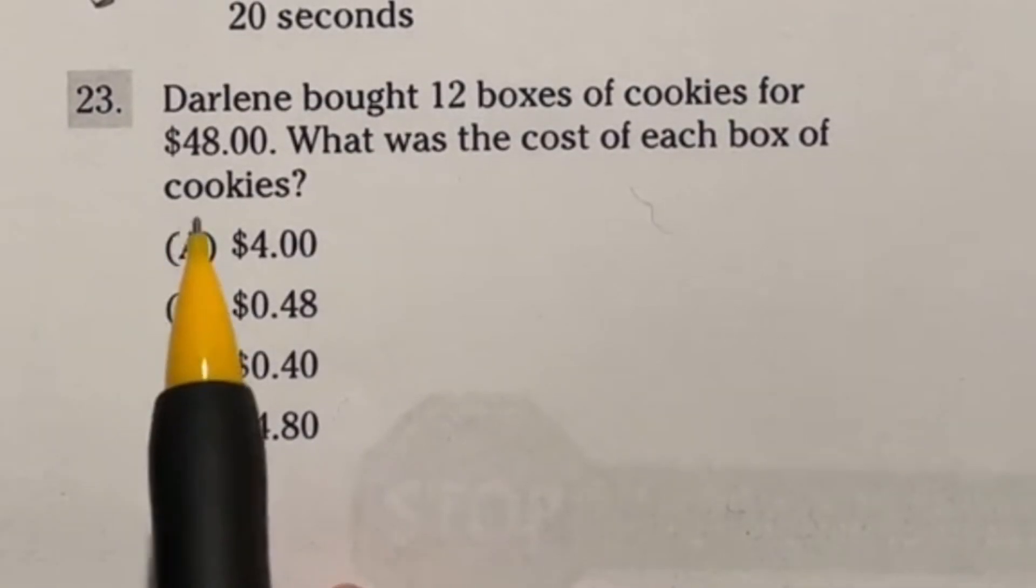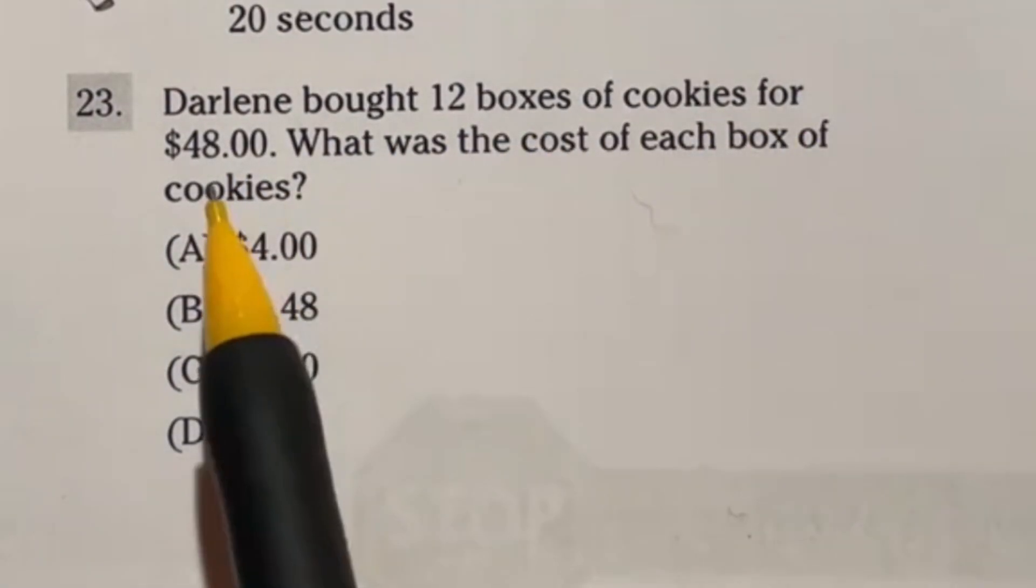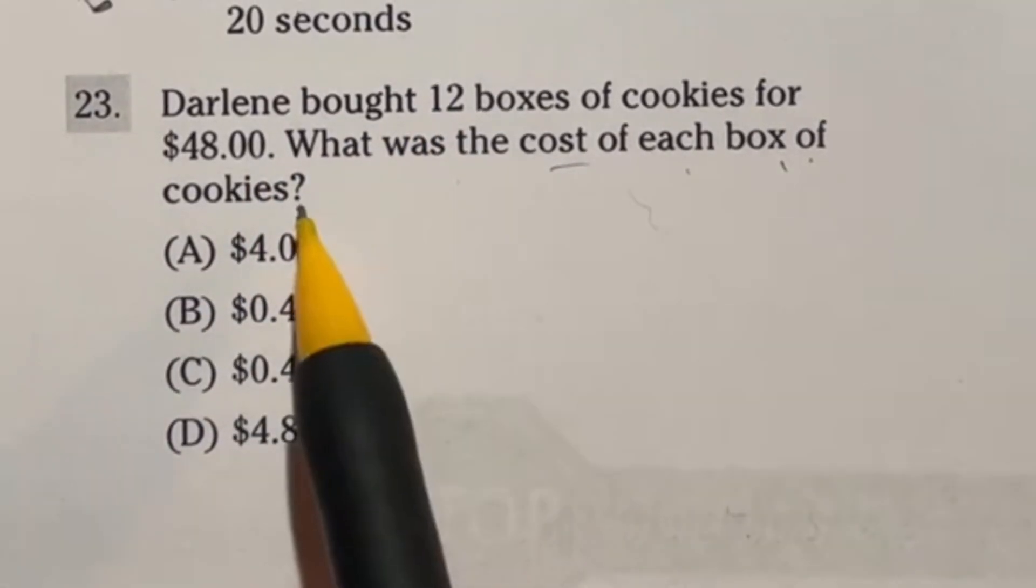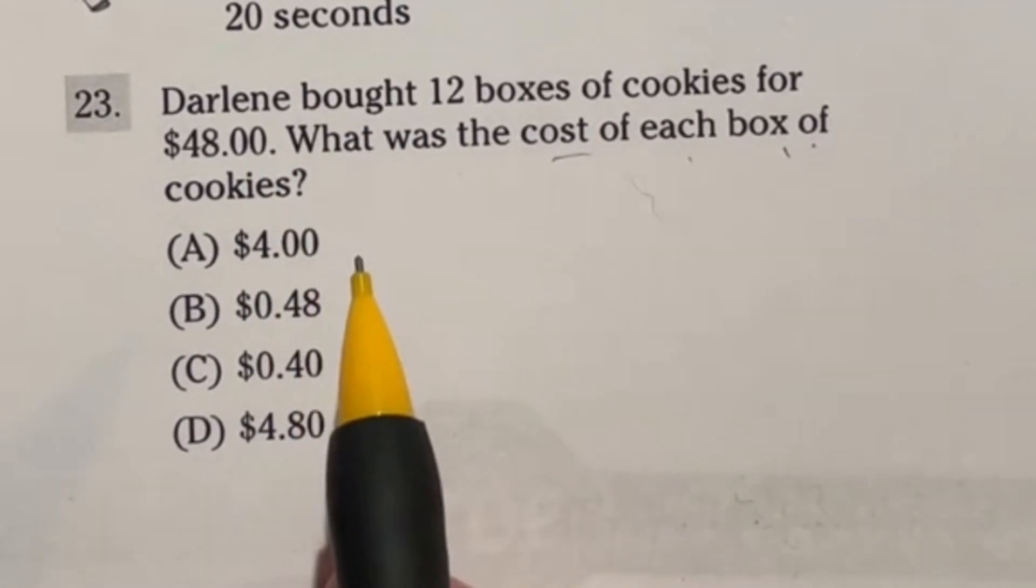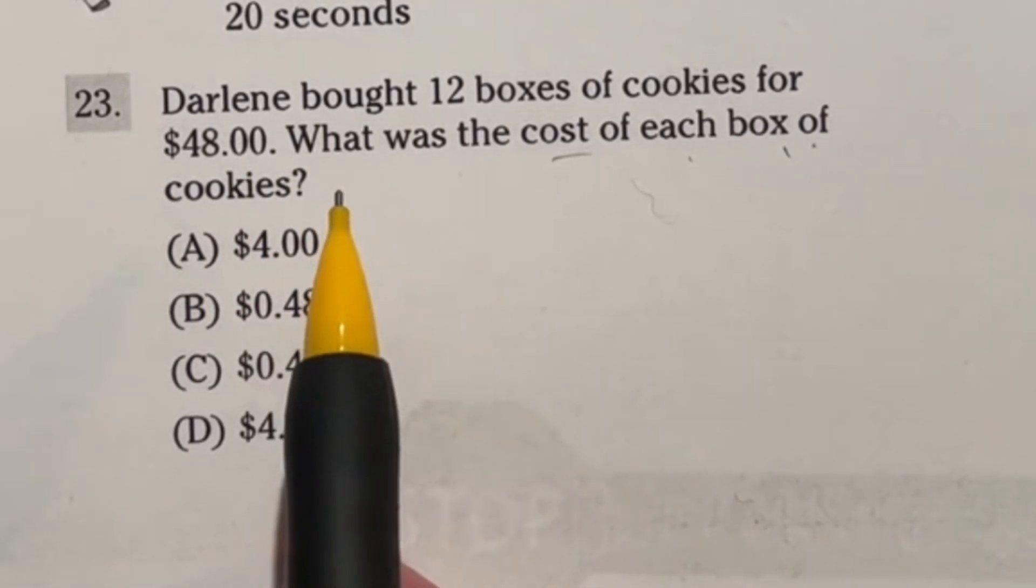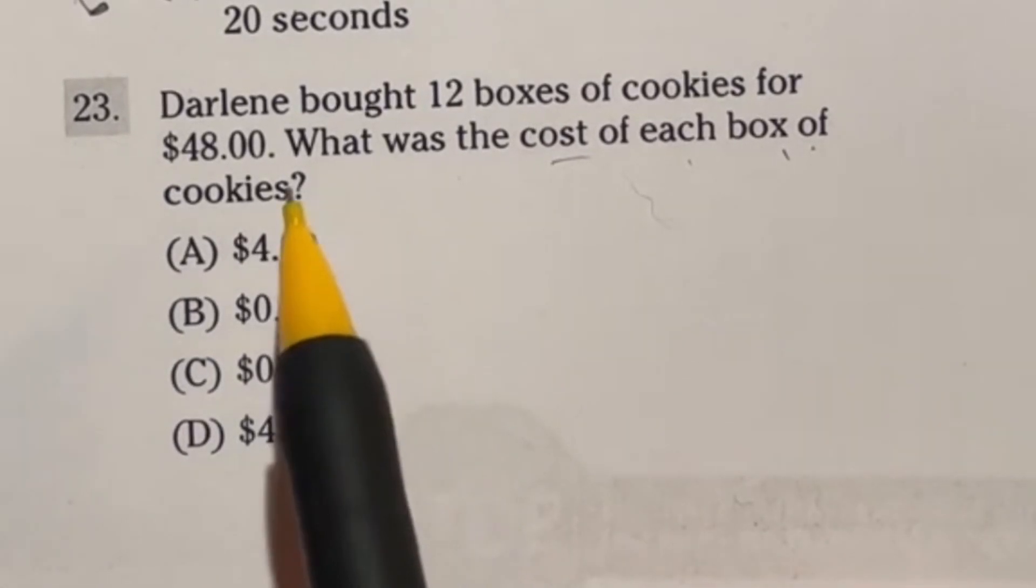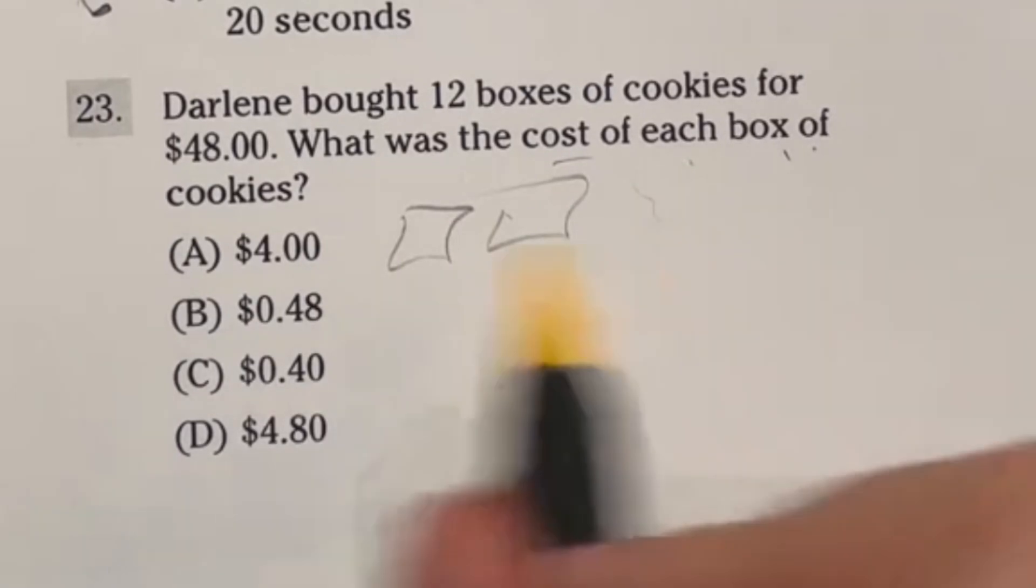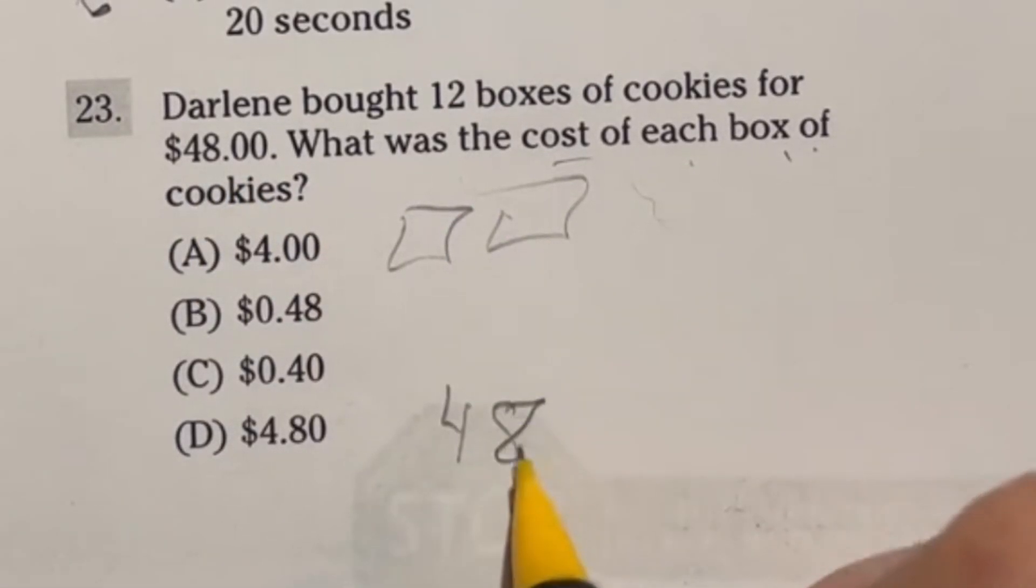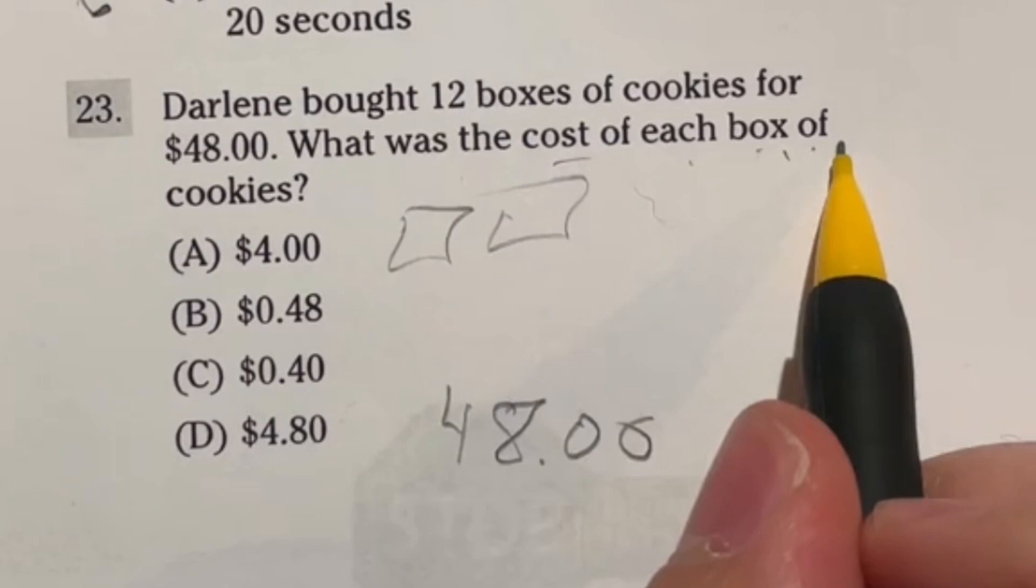All right, we're looking at number 23 on the ASVAB arithmetic reasoning portion. It says, Darlene bought 12 boxes of cookies for $48. What was the cost of each box of cookies? So here's the deal. If you're looking at this and you're like, duh, I already know the answer, it's because you get what they're asking here. So the key is for people that are like, okay, I'm just not sure what I would do first here or what it is that it's asking for. So let's break this down on how I would choose what type of question this is. Darlene bought 12 boxes. So this is saying you got 12 boxes of cookies. All right, there was a total of $48 spent and they want to know the cost of each box.